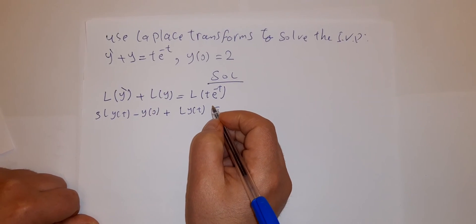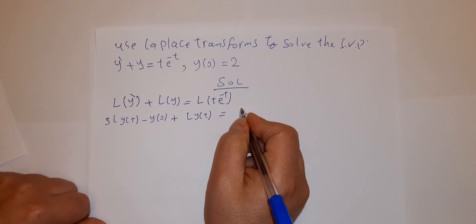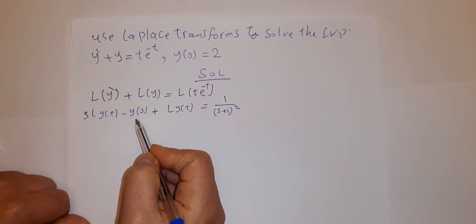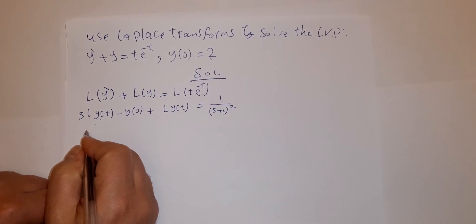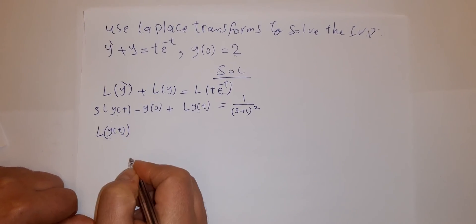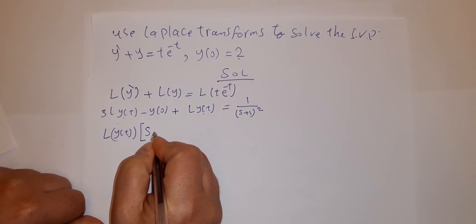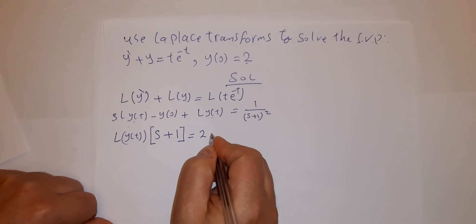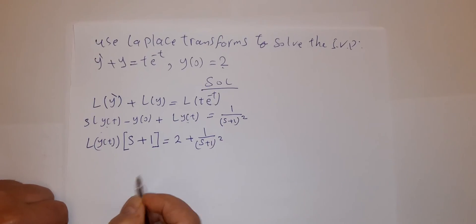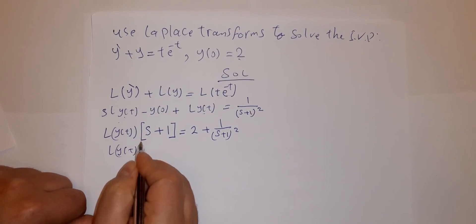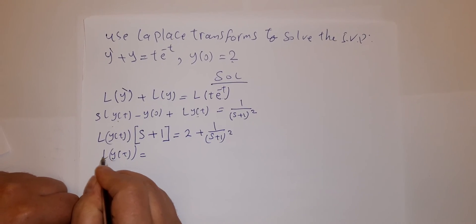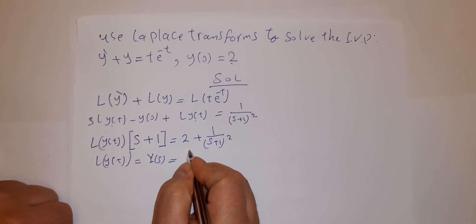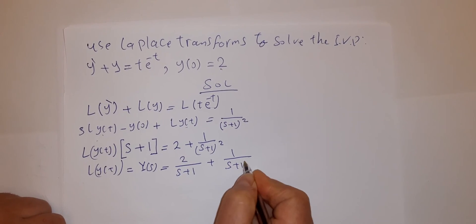From the table of Laplace transforms, L{t·e^(−t)} = 1/(s+1)². Using the initial condition y(0) = 2 and taking L{y(t)} as a common factor, we get L{y(t)}·(s + 1) = 2 + 1/(s+1)². Dividing by (s + 1), L{y(t)} = 2/(s+1) + 1/(s+1)³.